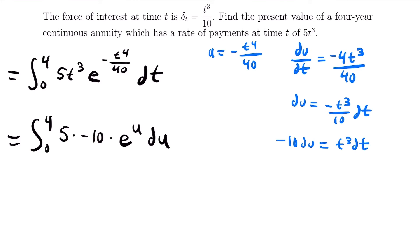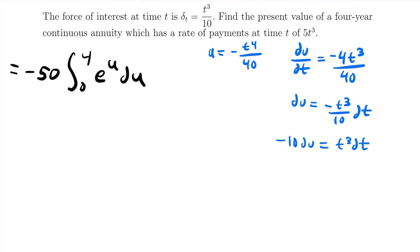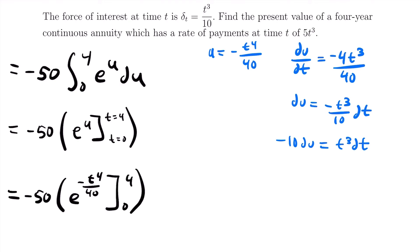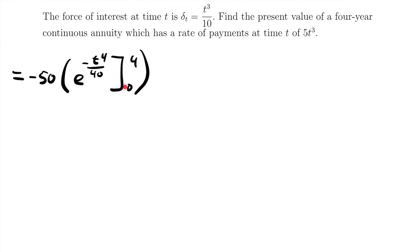Substituting, we get the integral from 0 to 4 of 5 times negative 10 times e^u du. Pulling out the constants gives negative 50 times the integral from 0 to 4 of e^u du. Integrating e^u gives e^u, evaluated with t-bounds from 0 to 4. Substituting u back to negative t⁴/40, we have negative 50 times e^(−t⁴/40) evaluated from t=0 to t=4.